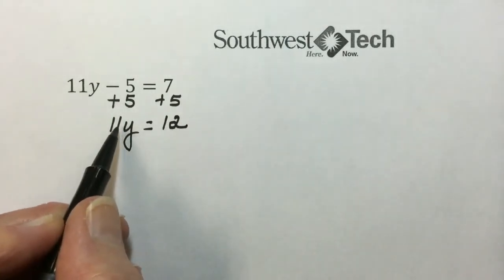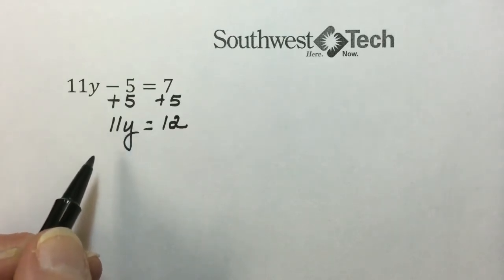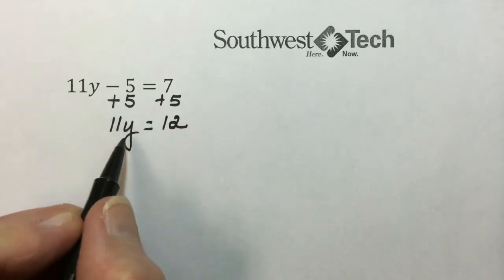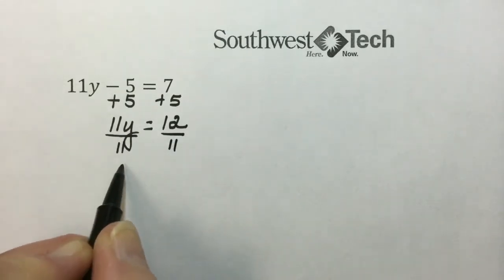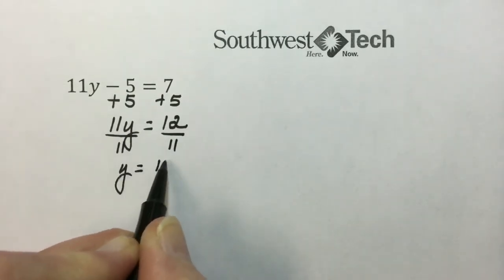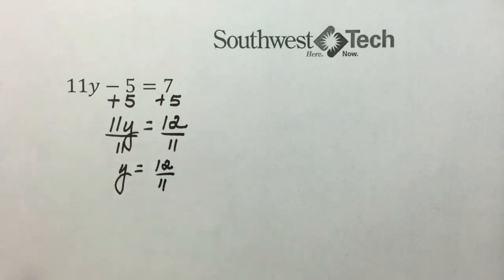Last operation is multiplication. We'll use the multiplication principle and divide both sides by 11 to undo the multiplication. And we end up with an answer of 12 elevenths.